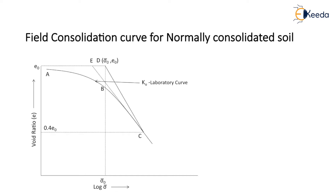By joining points D and C, we can obtain the field consolidation curve, represented as Kf. The slope of line DC is equal to the compression index of the in situ soil. If the sample is remolded and tested again, the compression curve Kr is obtained. The slope of the Kr curve is somewhat smaller than that of the Ku curve.